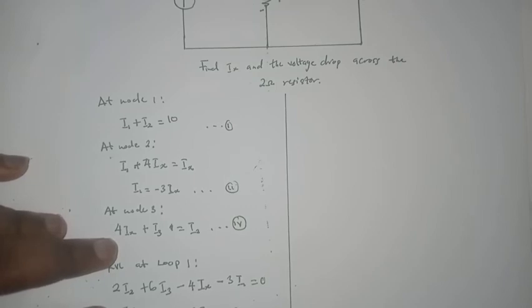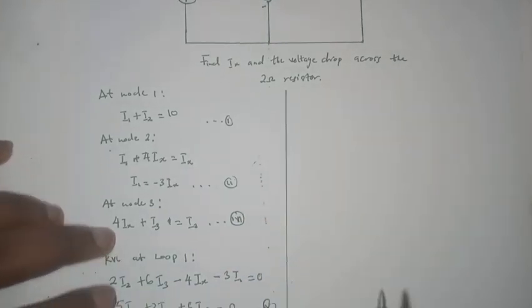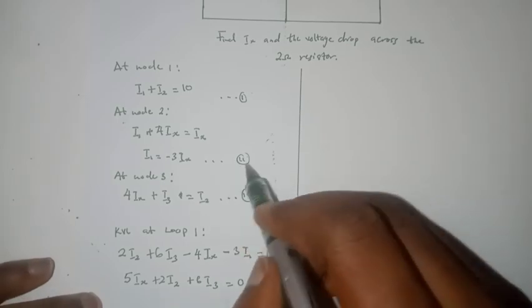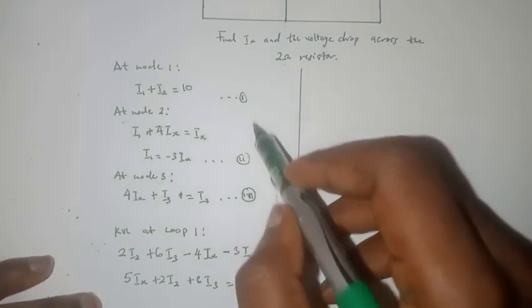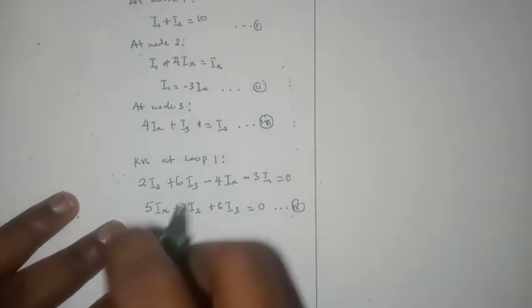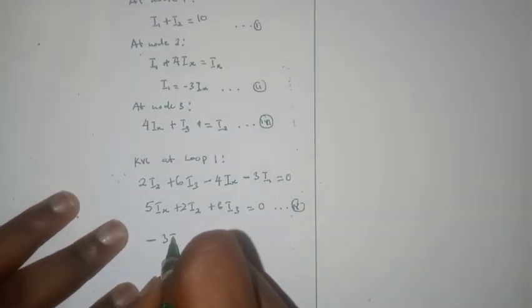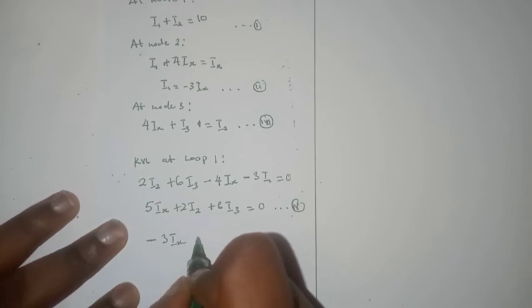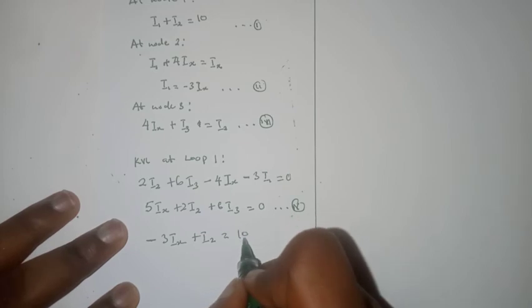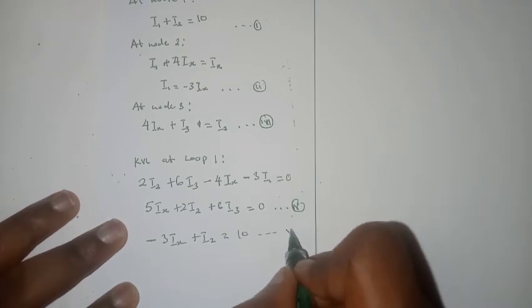This is the third equation and this is the fourth equation. We can also substitute this equation into the fourth equation, that's the second equation into the first equation. Then we will have minus 3ix plus i2 equals 10. Let's call this our sixth equation. So we can solve equations 1, 2, and 3 simultaneously.